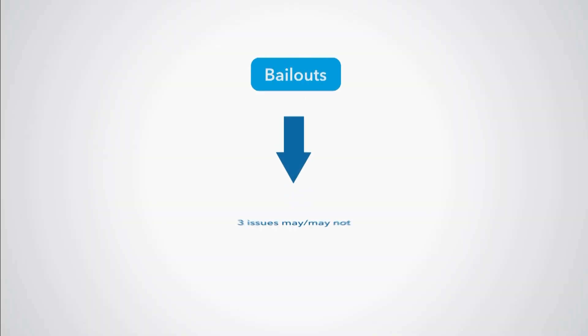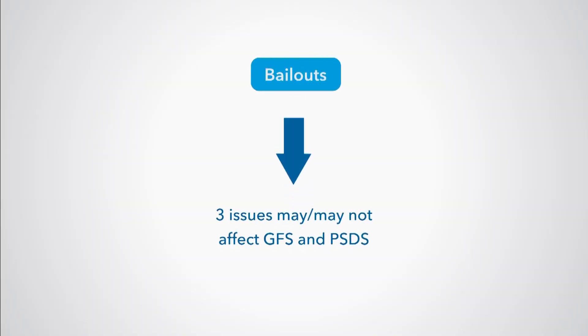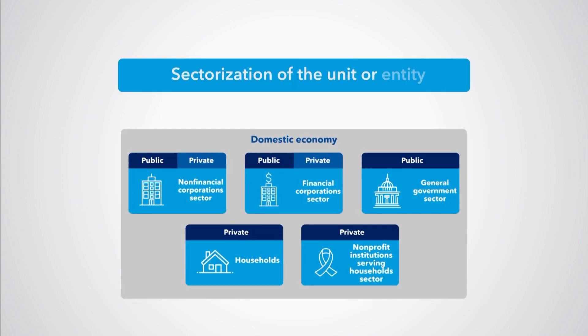The government may also have intervened indirectly by extending the range of guarantees it is prepared to offer to the financially distressed corporation. Broadly, three main issues arise with bailout operations that may or may not affect GFS and/or PSDS. The first issue is the sectorization of the entity or unit created to finance or manage the sales of assets and/or liabilities of the distressed corporation. This is normally called the restructuring agency.